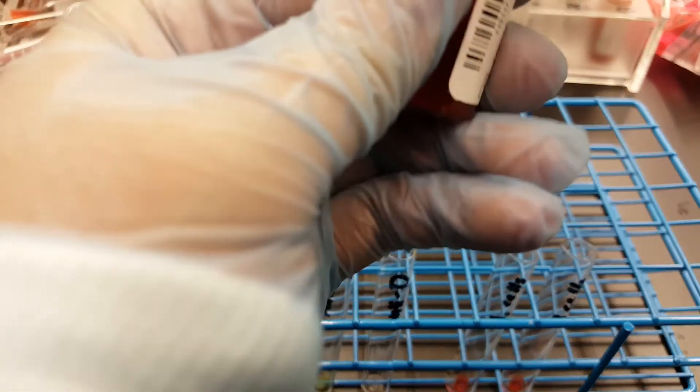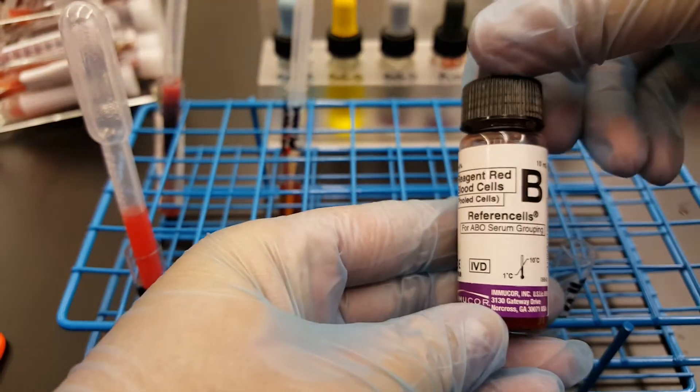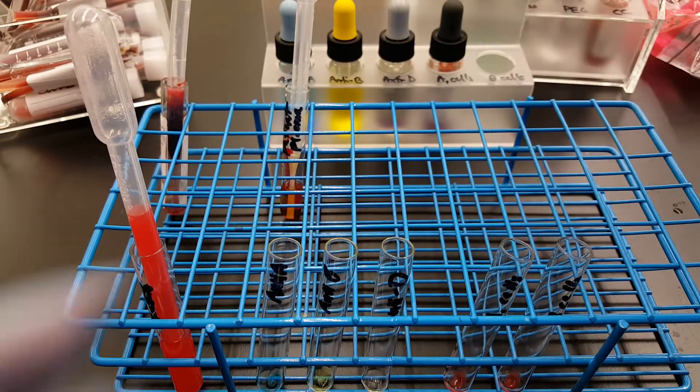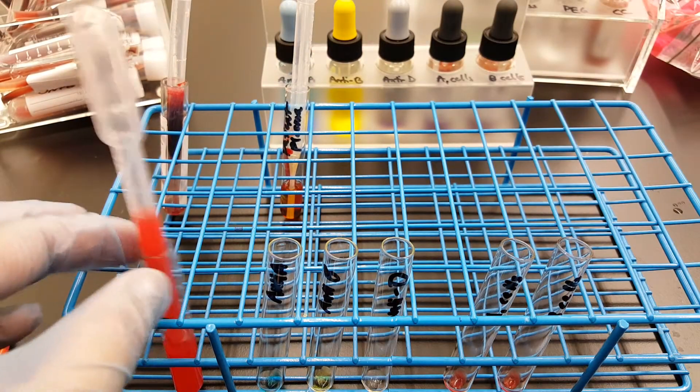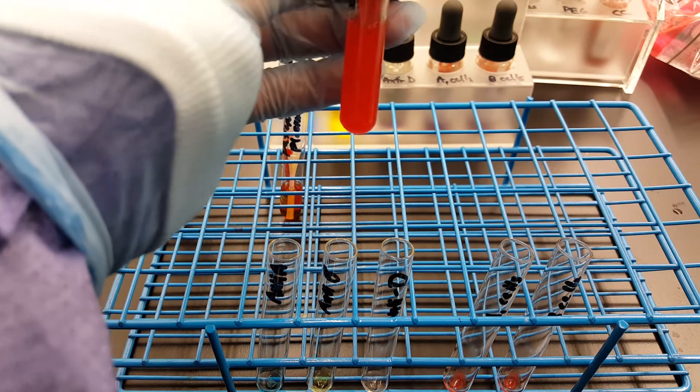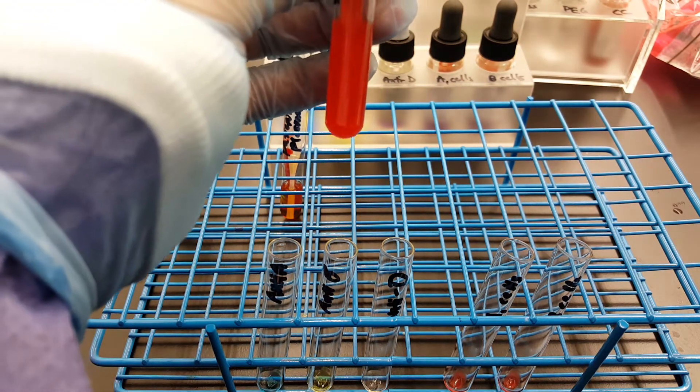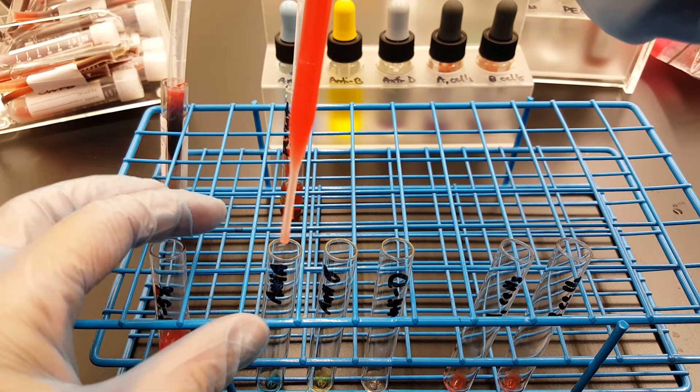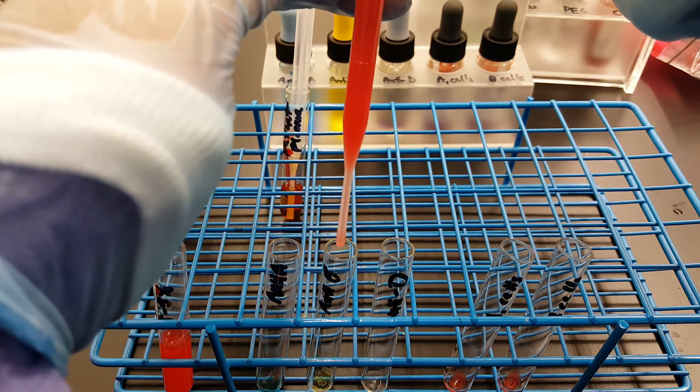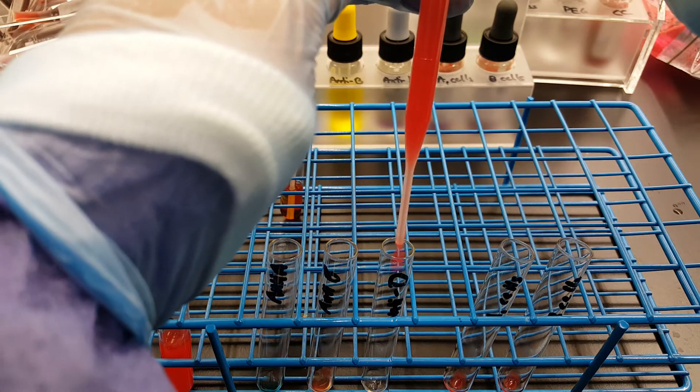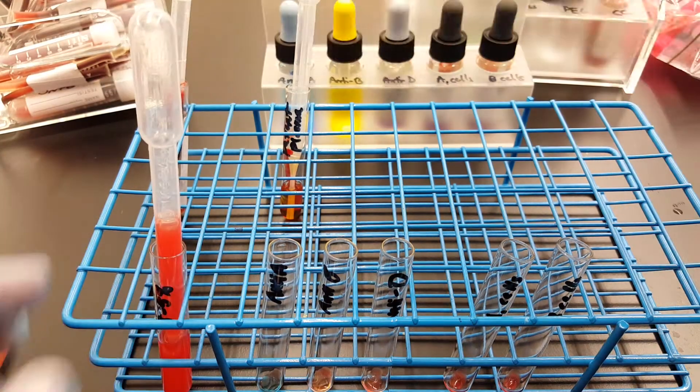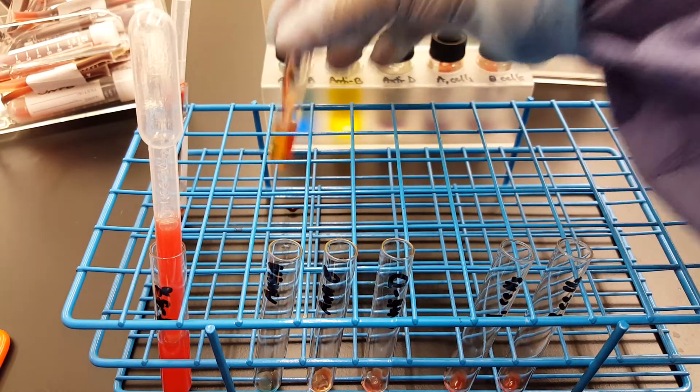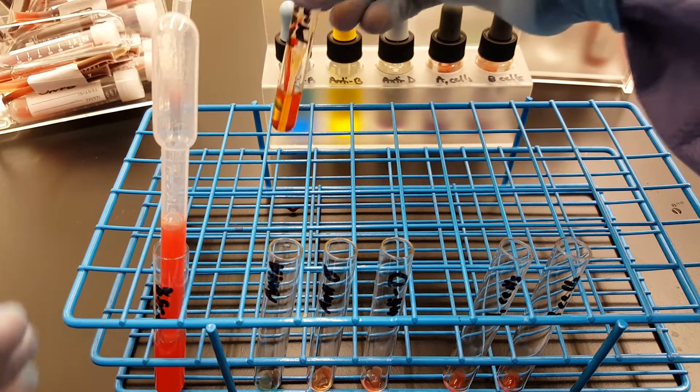Okay, so that's one drop of all the reagents—this was the B cells—and what we're going to do now is add the red cells, one drop of the patient suspension red cell suspension to each of the tubes. Okay, so only the forward typing tubes.